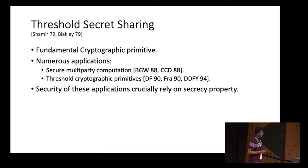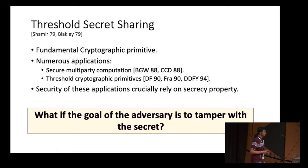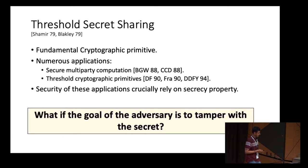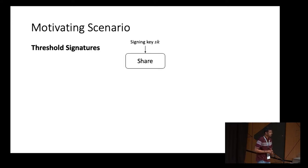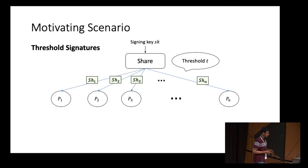But what if the adversary's goal is not to learn the secret, but instead to tamper with it? To motivate this further, let's take the example of a threshold signature scheme. There is a sharing algorithm which takes in a secret signing key SK and splits it into N shares using any threshold secret sharing scheme.